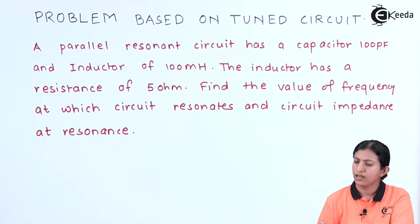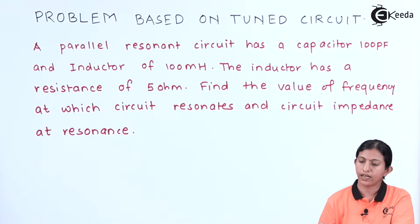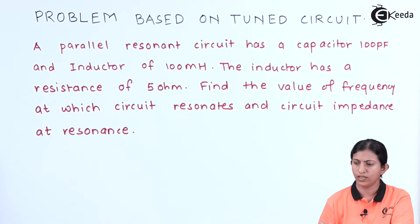The problem is given as: a parallel resonant circuit has a capacitor of 100 pF and an inductor of 100 mH. The inductor has a resistance of 5 ohm. Find the value of frequency at which the circuit resonates and the circuit impedance at resonance.